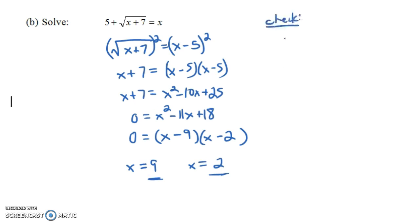We didn't do anything incorrectly here. Our work is correct, but let's check our solutions to see if we get the correct answer. It turns out I think one of these is going to be a fake solution, what's called an extraneous solution. If we plug in X equals 9, notice we get 5 plus the square root of 9 plus 7 is equal to 9. Is that true? Well this would say 5 plus the square root of 16 is equal to 9. That just says 5 plus 4 equals 9, and clearly that's true.